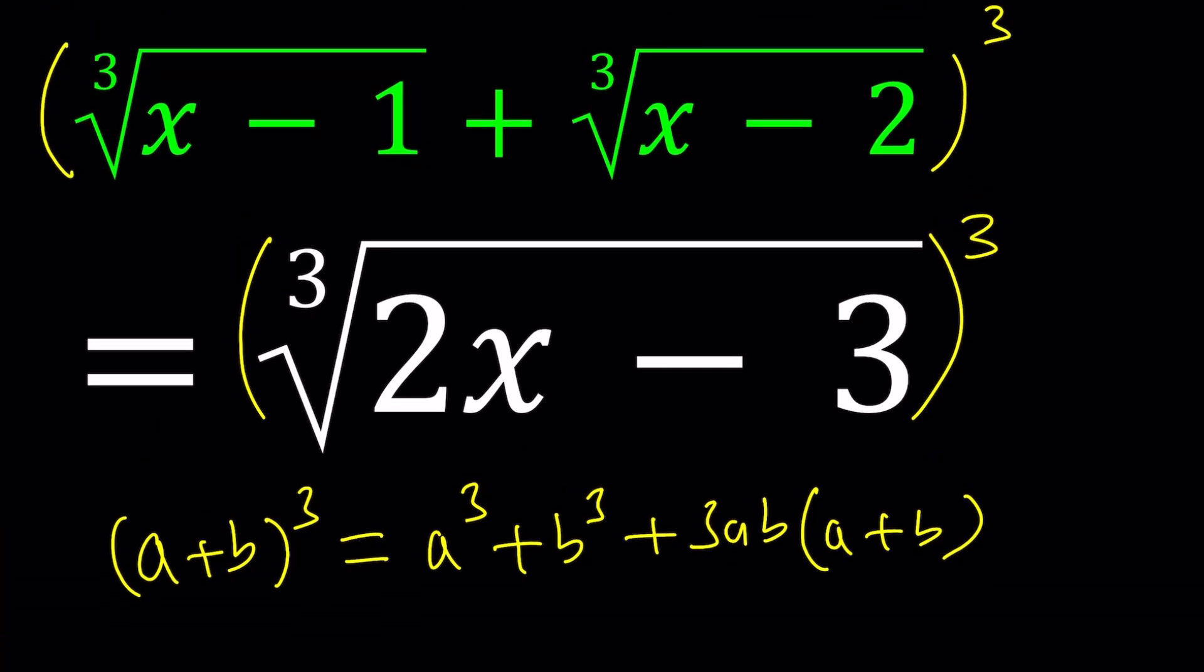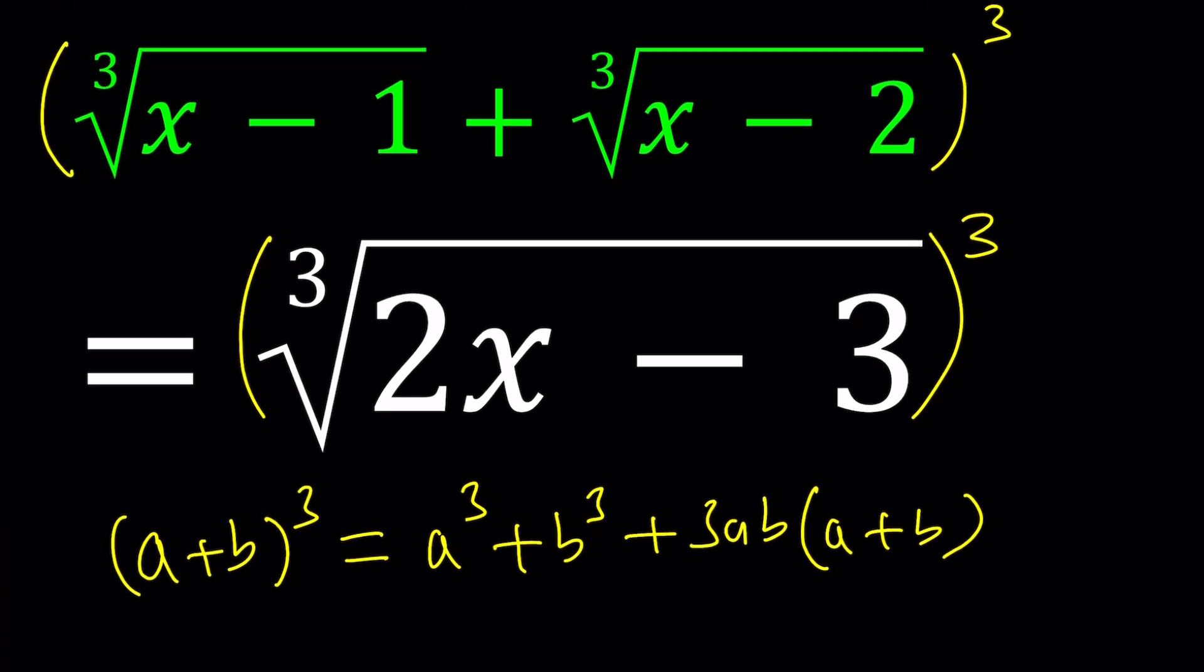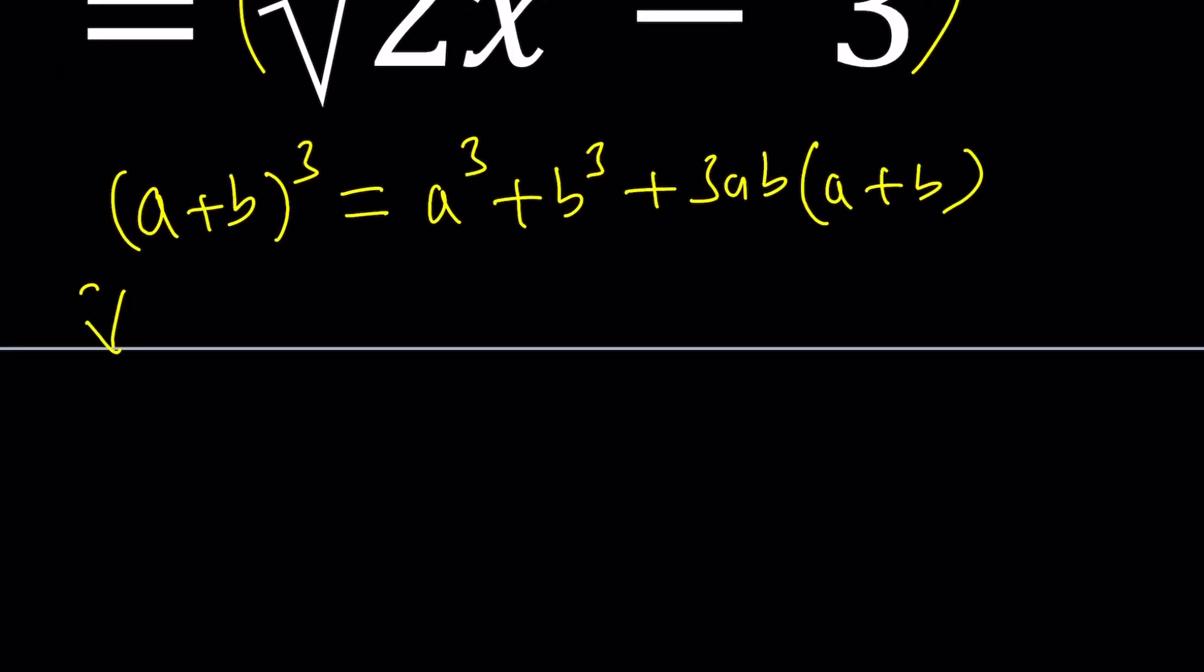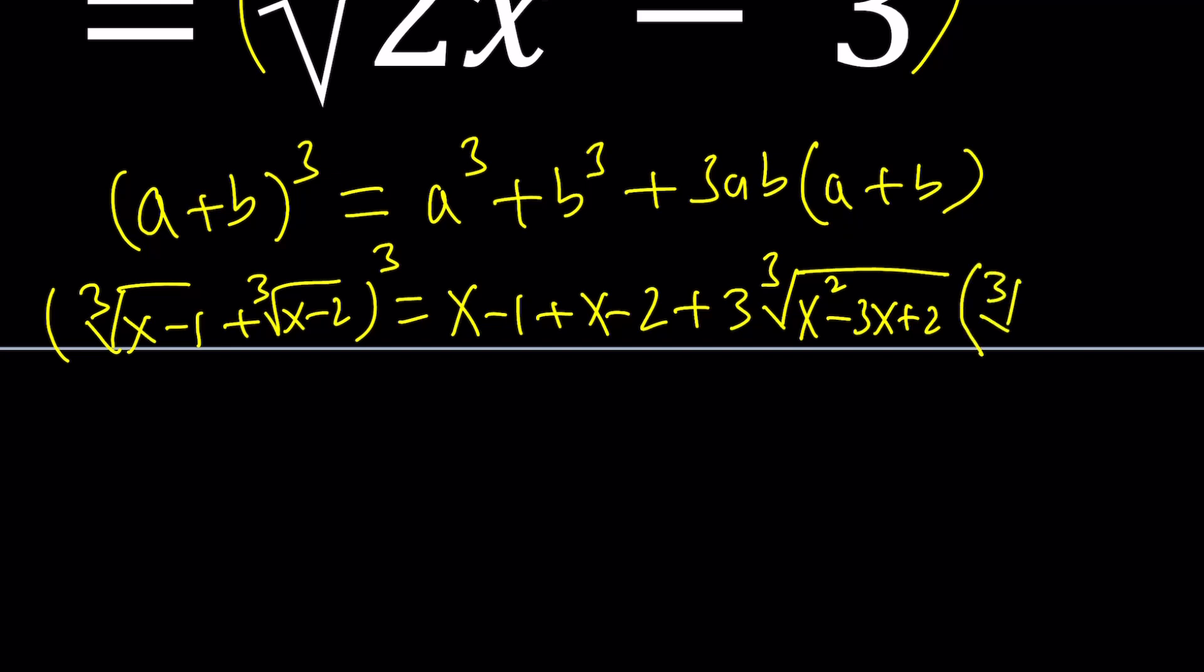So let's go ahead and apply it to the left-hand side. This is going to be our a and this is going to be our b. So when you cube this sum, it's going to equal x minus 1 plus x minus 2 plus 3ab. That will be 3 times the cube root of x minus 1 times x minus 2. You can go ahead and write it as x squared minus 3x plus 2 in this case. And that multiply by a plus b, which is the radical, right?